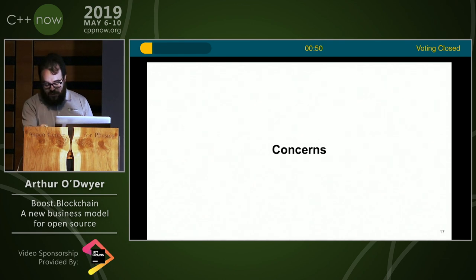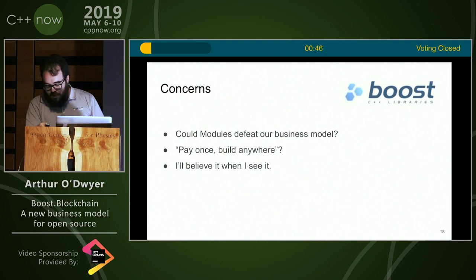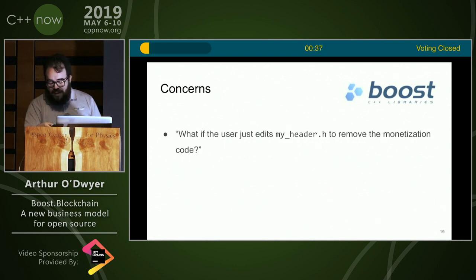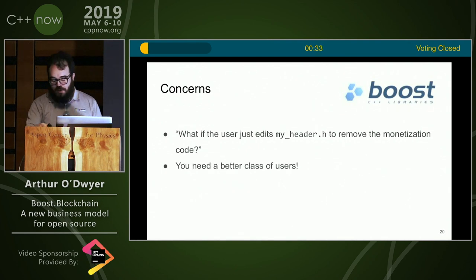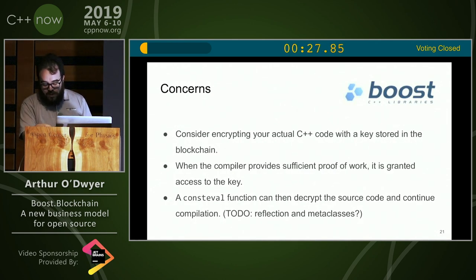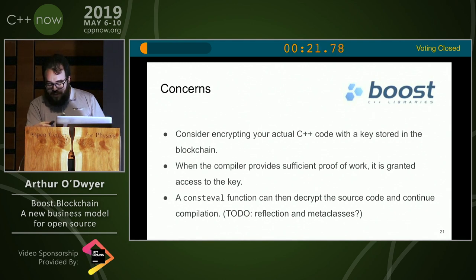Let's talk about some concerns you might have about using Boost Blockchain in your own project. Could our entire business model be defeated by modules? Could someone make a module out of your code and then use it in all their subsequent compiles without paying for those compiles? I'll believe it when I see it. You might also ask: what if the user just edits my header to remove the monetization code? Well, first of all, if that's happening, you've got to get yourself a better class of users — the ones you have can't be trusted. But there are technical ways to mitigate that. You could encrypt your code with a key stored in the blockchain. When the compiler provides sufficient proof of work, it gets access to the key, then it can use a consteval function to decrypt the source code and continue compilation.